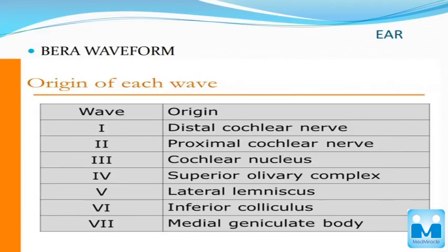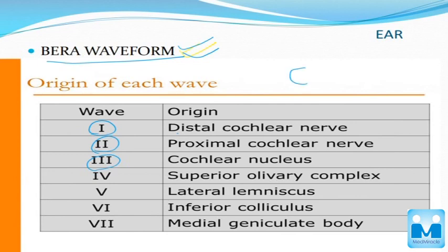Another important topic is BERA waveforms. In BERA waveforms, you have to know how each wave is created — whether it is the proximal or distal cochlear nerve, the olivary nucleus, or the inferior colliculus which generates each wave. The mnemonic is E. coli. You have to know how each wave is produced.